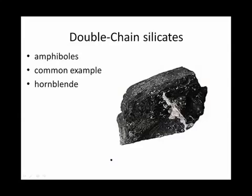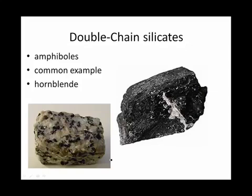Double chain silicates include the amphiboles, a family of silicates. The most common example of an amphibole is hornblende. Hornblende is rarely found alone, but you've seen it a lot as those little black specks in granite.